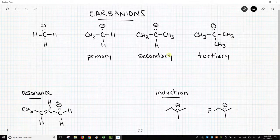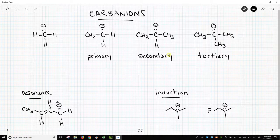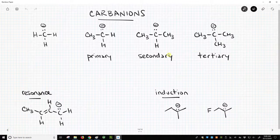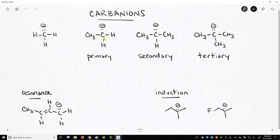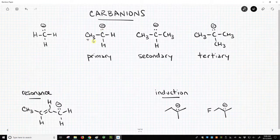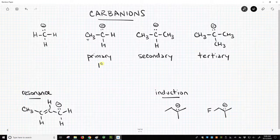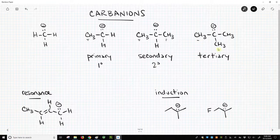The trends for carbanions are very similar to carbocations except they are exactly the opposite, and naming carbanions follows carbocation trends. In this structure here, we have a carbon with a negative charge with one attached carbon group. That's a primary carbanion. Once we get two carbon groups, it's secondary. Once we have three, it is tertiary.